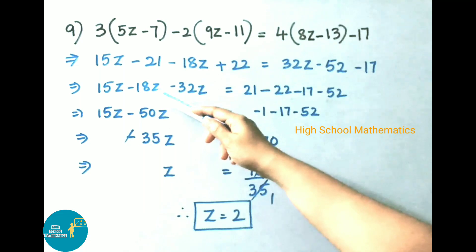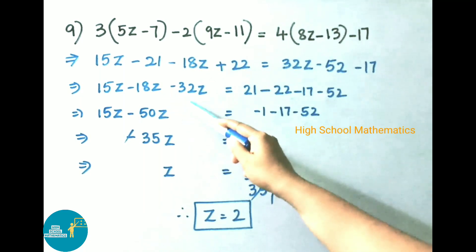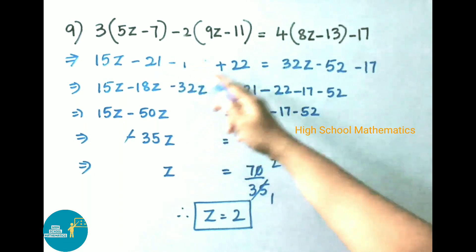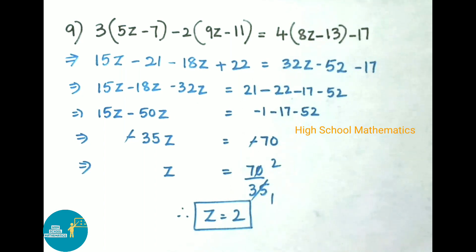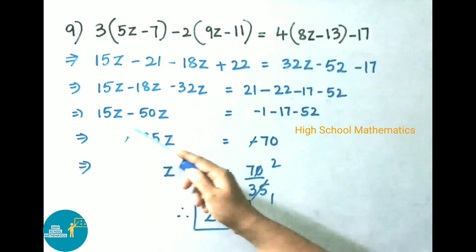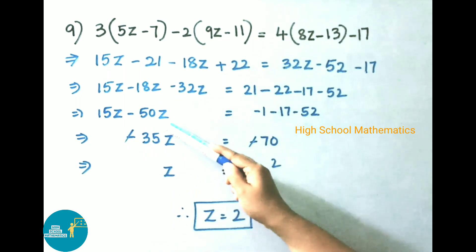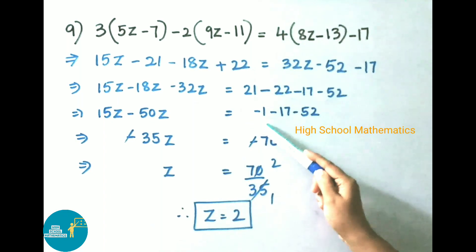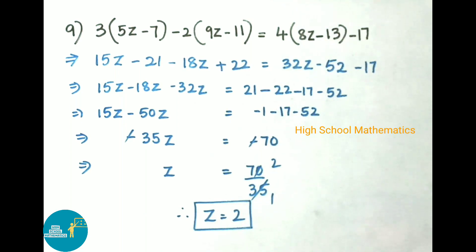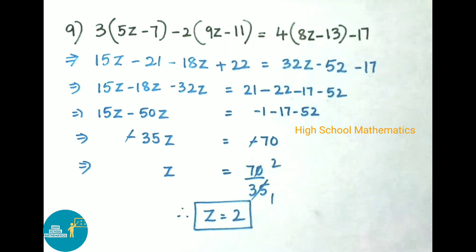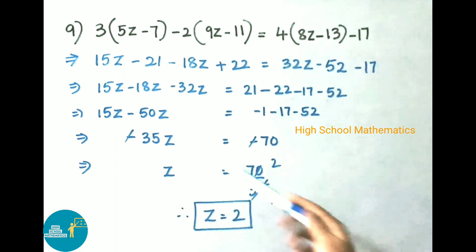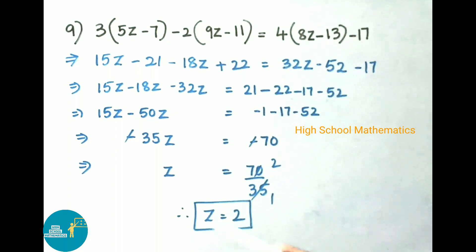That implies 15z minus 18z, and transposing plus 32z gives minus 32z on the left. Equals minus 21 transposed to plus 21, plus 22 transposed to minus 22, and minus 17 and minus 52 remain. So 15z minus 18z minus 32z, that is minus 35z, equals 21 minus 22 minus 17 minus 52, giving minus 70. Here minus and minus cancel, so z equals 70 by 35. 35 twos are 70, therefore z equals 2.